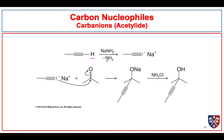As long as we have a base whose conjugate acid has a pKa greater than 25, that base should be strong enough to pull off the proton. We saw that Grignard reagents are strong enough bases to pull off this proton. Here we see an example where we use sodium amide. The amide will pull off the proton to form ammonia and our acetylide anion. This is a carbanion, which can then be used as a carbon nucleophile to react with an aldehyde or ketone.